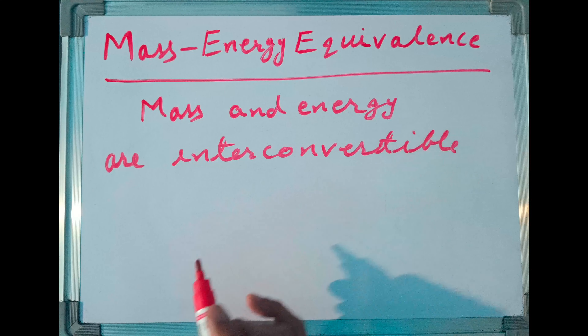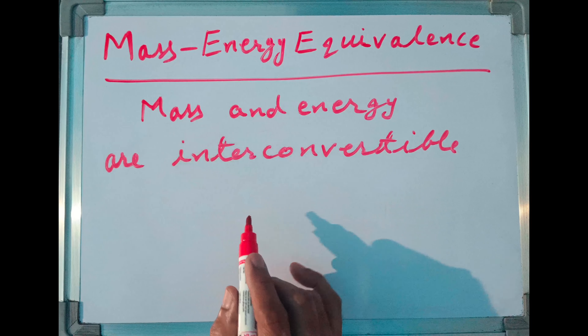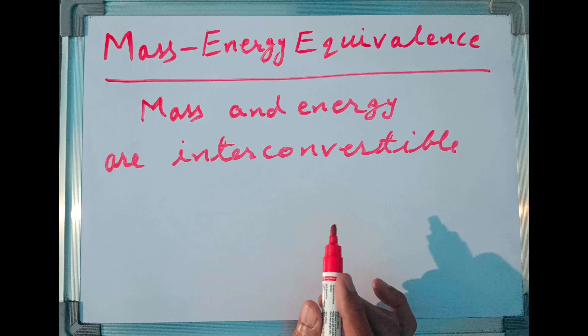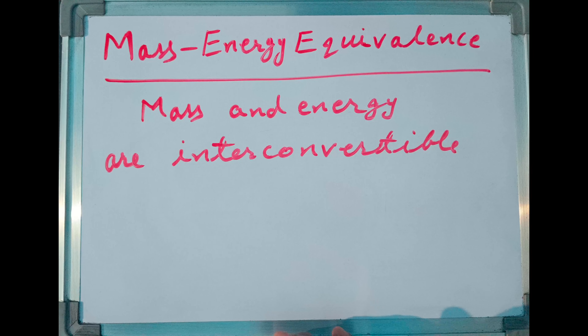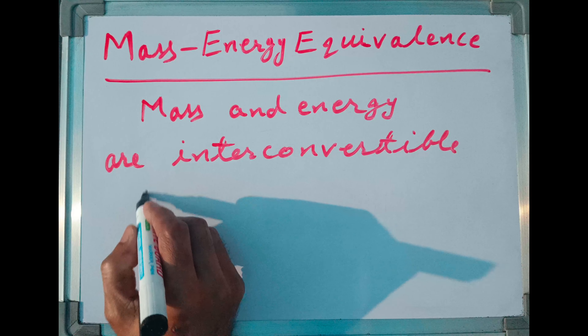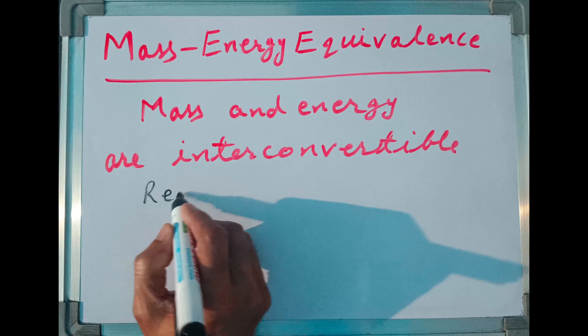Interconvertible means mass can be converted into energy and energy can be converted into mass. Now the question is: from how much mass, which amount of energy can be produced? For that purpose, a relation was given by Einstein.